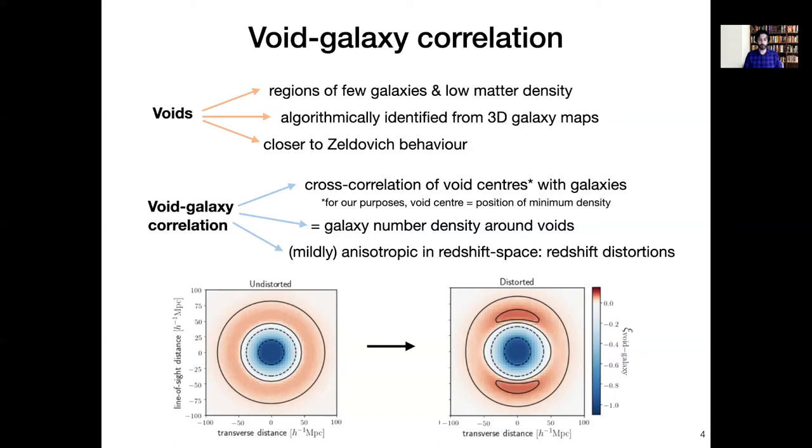Having identified these voids, the void galaxy correlation is then just the cross-correlation of centers of these voids, which for our purposes correspond to the position of the minimum density, cross-correlated with galaxies. And that's actually exactly equivalent to the galaxy number density as a function of position around the voids. So it's essentially a constrained one-point function as opposed to a standard two-point function.